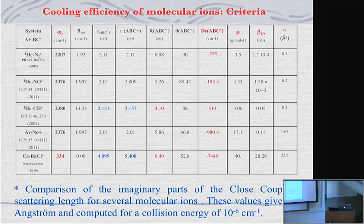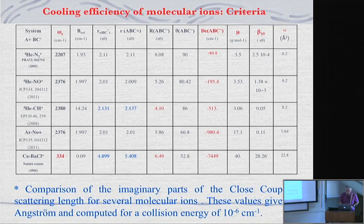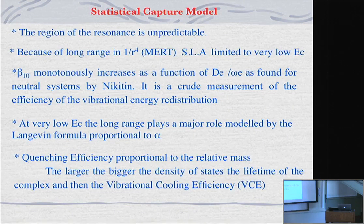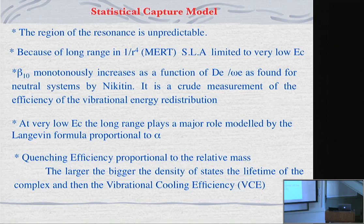In the j equals zero state of the diatom, comparing all these things, beta zero, beta one zero, is also increasing as a function of the ratio of the well depth divided by the vibrational frequency. This was also noticed for neutral systems, and it is a crude measurement of the efficiency of vibrational energy redistribution.